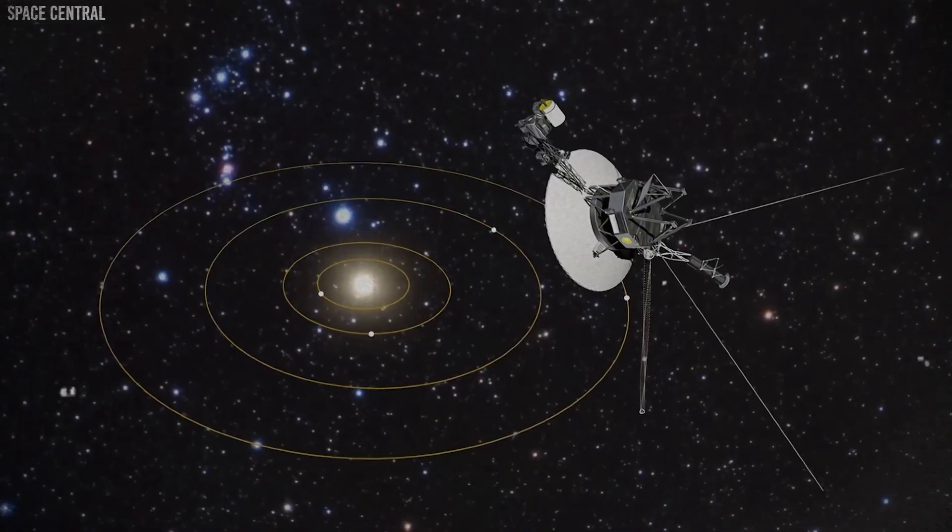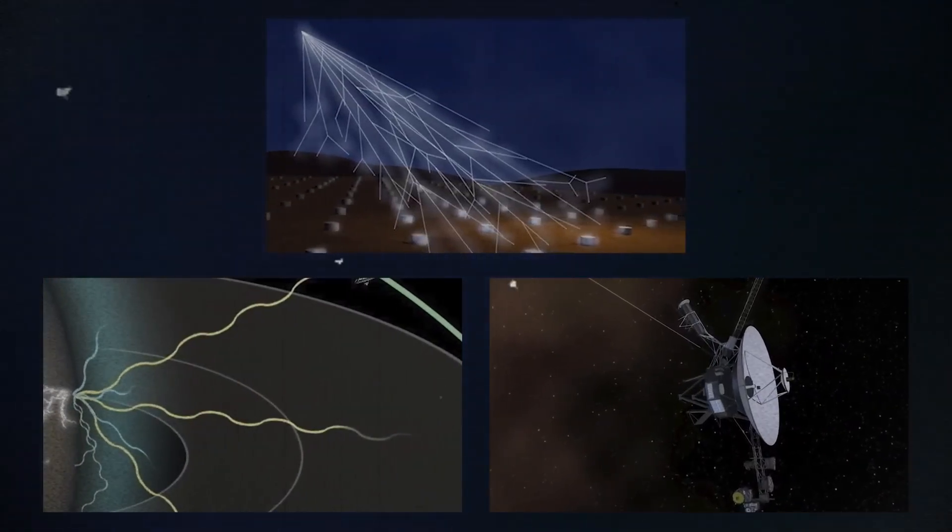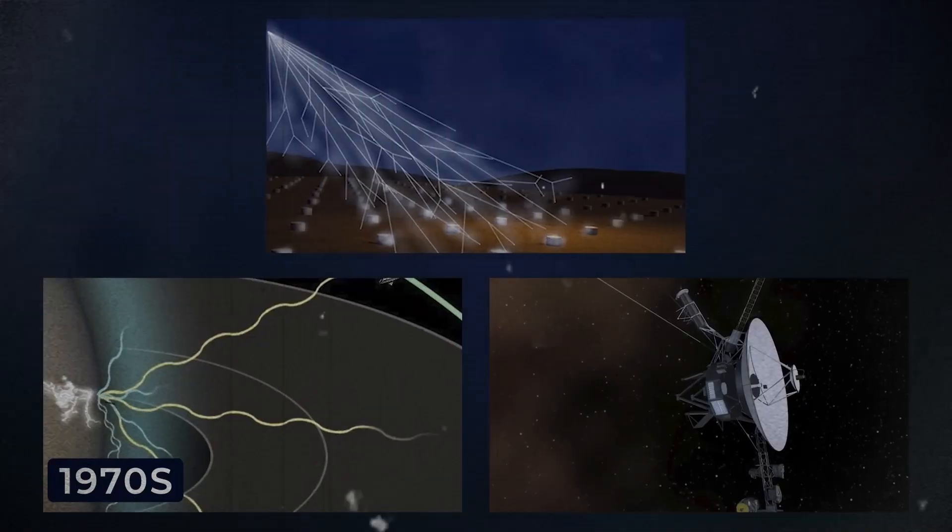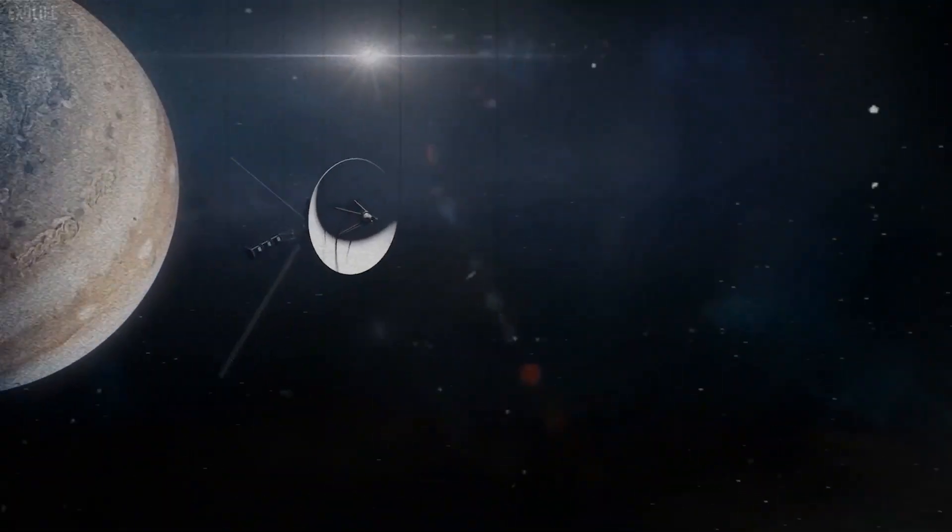Voyager 1 and Voyager 2 have both crossed this boundary and exited the heliosphere. This graph shows actual data from Voyager during that moment. The lower graph shows the number of solar origin particles dropping, while the upper graph shows a sudden increase in particles coming from interstellar space.